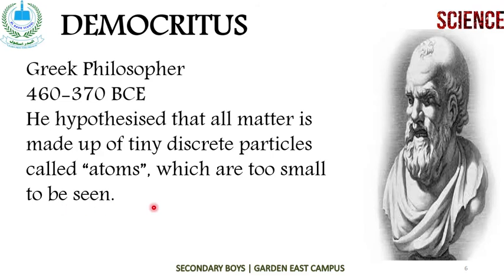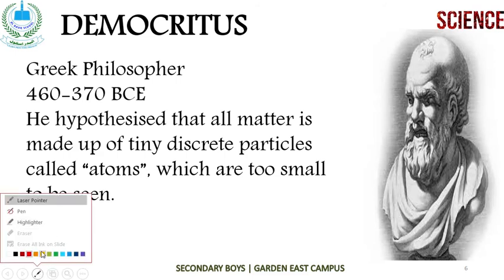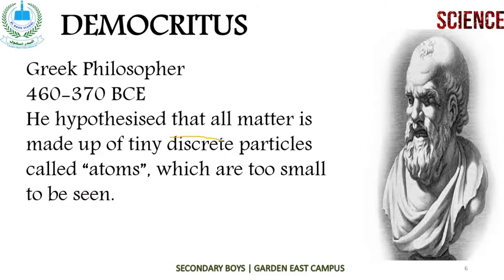According to Democritus, every matter is composed of discrete particles. Discrete means countable in terms of whole numbers — 1, 2, 3, 4, 5, up to millions and trillions of particles. It cannot be fractional. He named these particles as atoms, which are too small to be seen with our eyes.